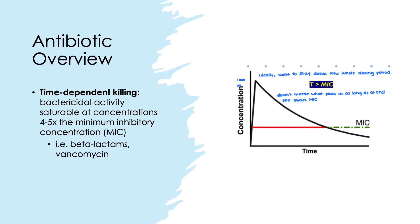Now I'll go over some antibiotic pharmacodynamics. There are two types of killing. The first is time-dependent killing, where bactericidal activity is saturable at concentrations 4 to 5 times the minimum inhibitory concentration, or MIC — the lowest concentration needed to inhibit visible bacteria. Antibiotics like beta-lactams follow this pattern. Ideally, you want to stay above the MIC for the entire dosing period; the peak level doesn't matter as long as it remains above the MIC.